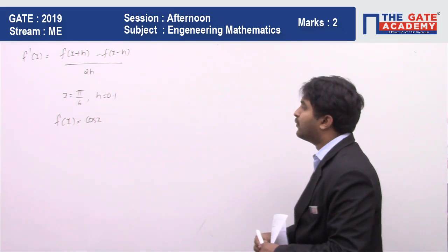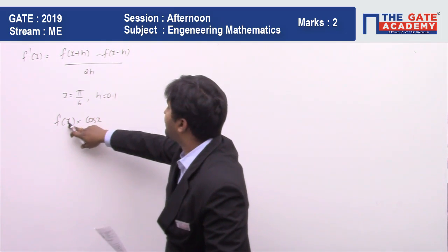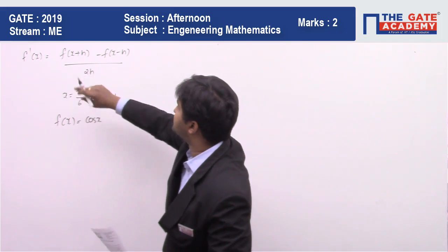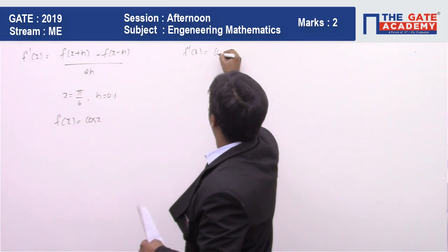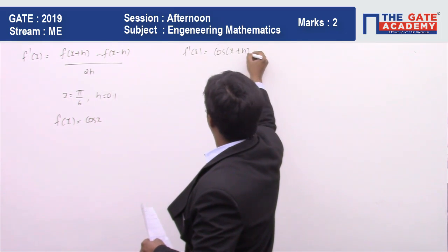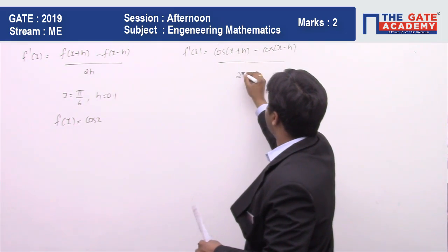So first of all I want to calculate the approximate value. The approximate value you will get when I put the value of f(x) = cos(x) in this equation. So f'(x) will be equal to [cos(x+h) - cos(x-h)] / 2h.